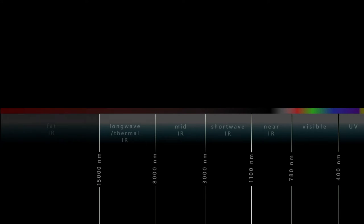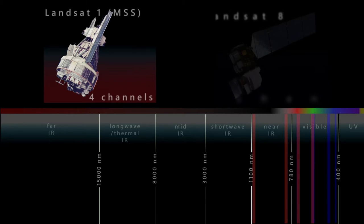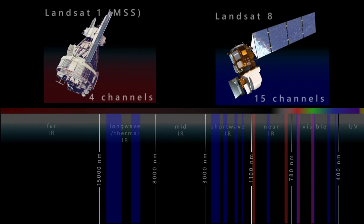Spectral resolution provides information about the ability of a sensor to distinguish between the ranges of the electromagnetic spectrum. The spectral resolution of a sensor increases with the number of channels in which it can receive ranges of the electromagnetic spectrum.